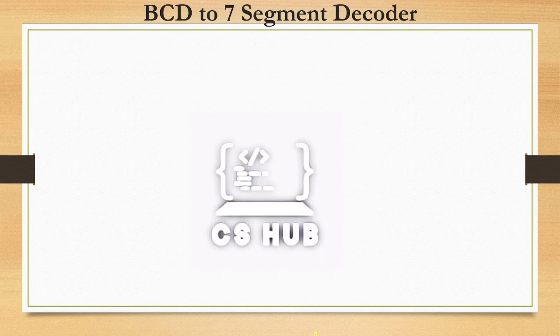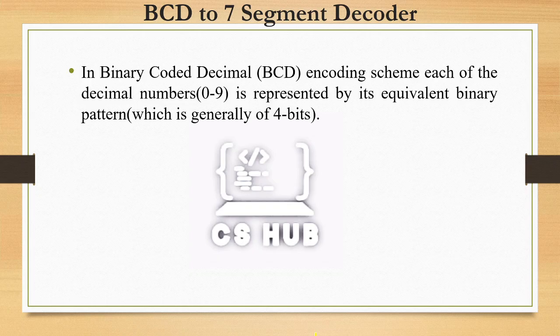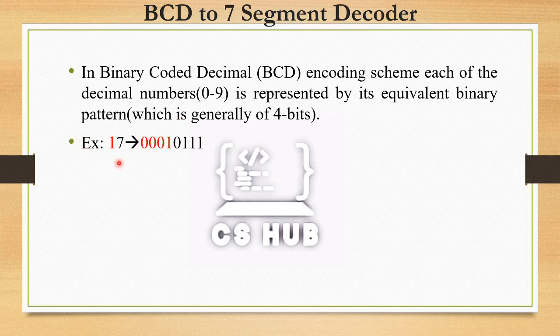Now we are discussing a special type of decoder: the BCD to 7-segment decoder. BCD stands for Binary Coded Decimal. In this coding scheme, each decimal digit from 0 to 9 is represented by its equivalent 4-bit binary pattern. For example, the decimal number 17 is represented in BCD by coding each decimal digit separately.